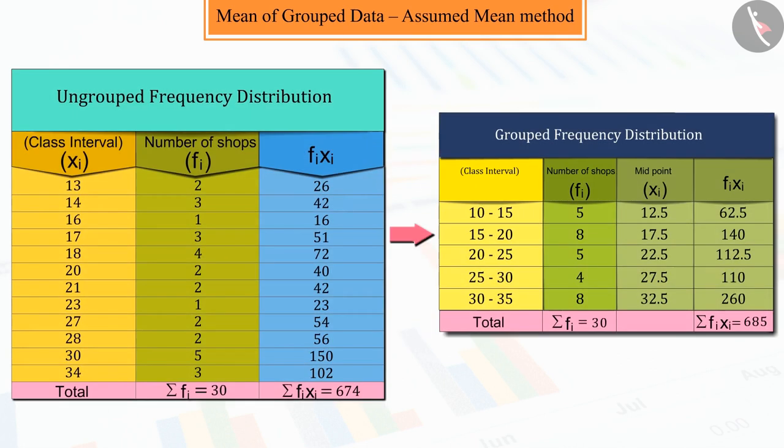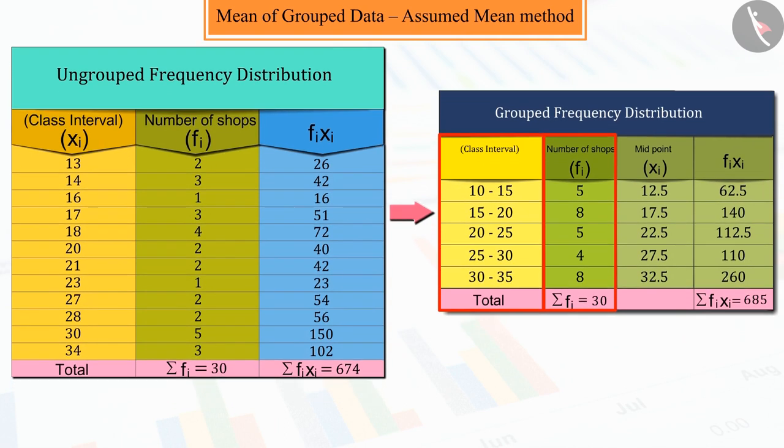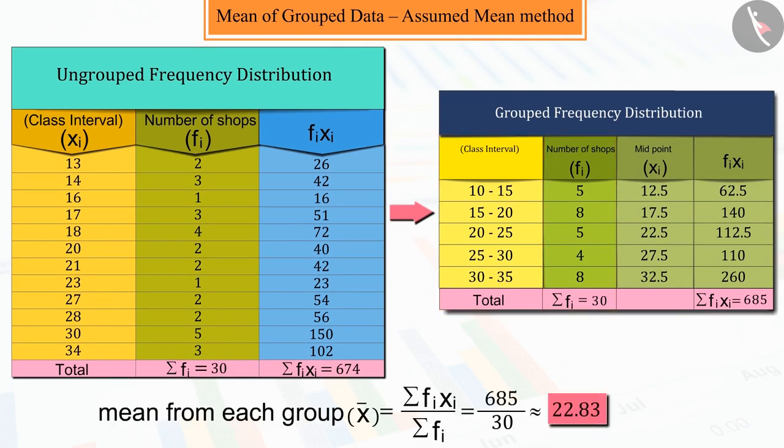We know that due to vast data, we classify ungrouped data into grouped data and by constructing class sizes, find the mean by direct method. But,